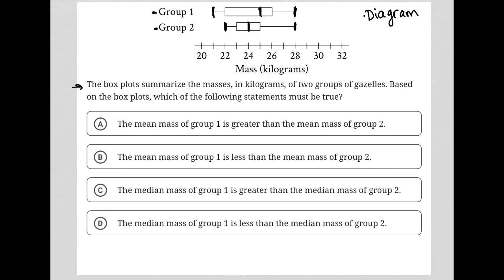Choice A: the mean mass of group one is greater than the mean mass of group two. I have no idea because there's nothing about this box plot that tells me mean. This line here, and I'll highlight it in red, tells me the median. So I don't know about the mean. Choice B also mentions the mean. I'm not sure.